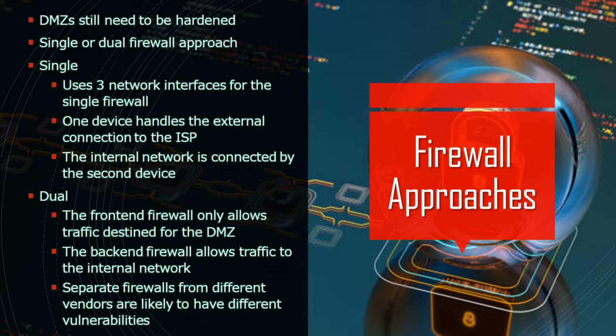There will be a firewall referred to as the front-end firewall, and it's configured to allow only traffic destined for the DMZ. The second firewall, or the back-end firewall, is used for the traffic that travels from the DMZ to the internal network. One way to amp up security even more is to use two different firewalls from separate vendors, since they're less likely to have the same security vulnerabilities. Lastly, if a threat actor does manage to break through one firewall, the second firewall will provide another obstacle.